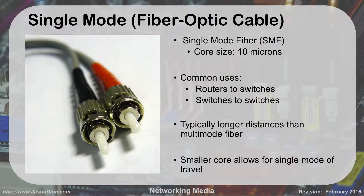With single mode fiber, the core size goes down to only 10 microns. Because it's so small, all the light travels in one direction and gets from one end to the other without bouncing. It handles much longer distances — for example, you could use single mode fiber to connect DC to Baltimore, about 30 to 40 miles away. It also delivers very high speeds, allowing that single mode of light to travel cleanly down the core.